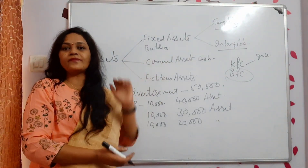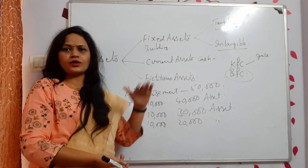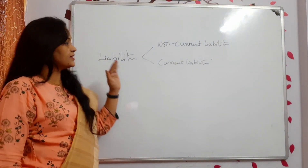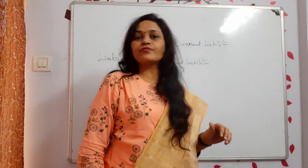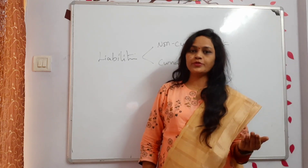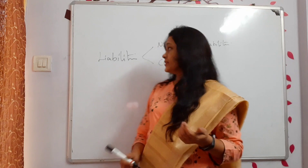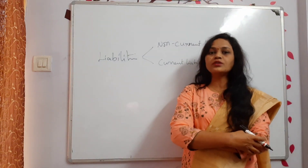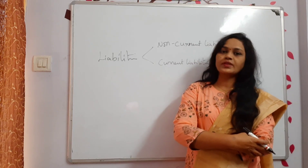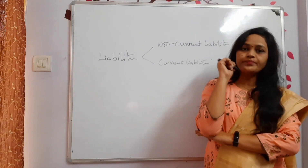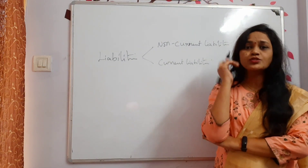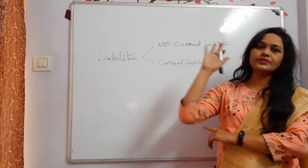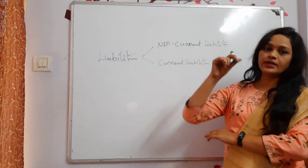Now let's learn the types of liabilities. Liabilities are the obligations or responsibilities of the business — payments you are going to make in the future. There are two types: non-current liabilities, also called long-term liabilities, and current liabilities, which are short-term liabilities.